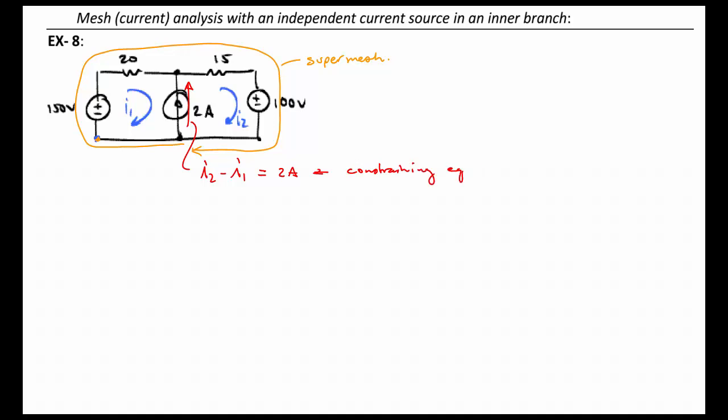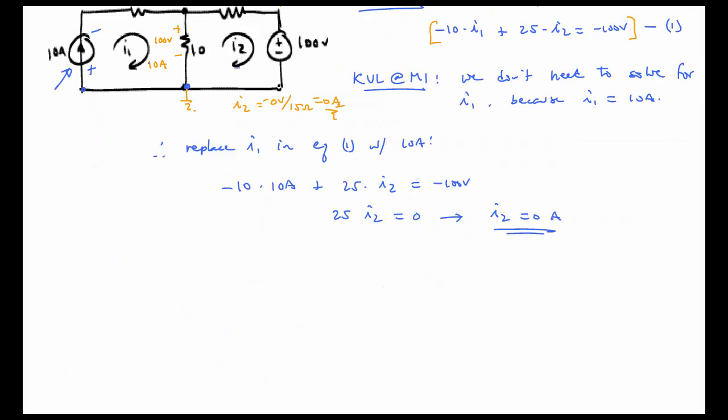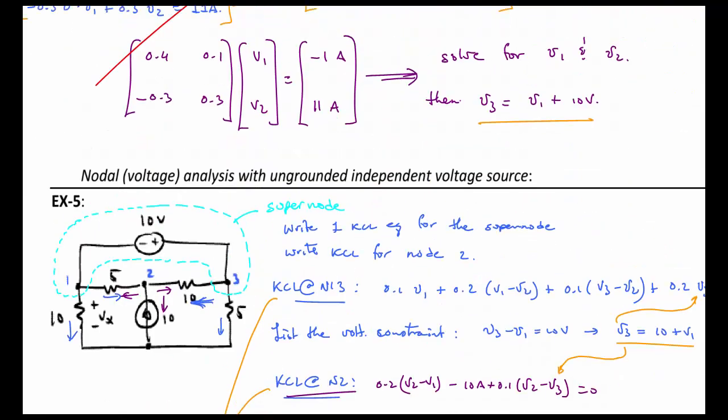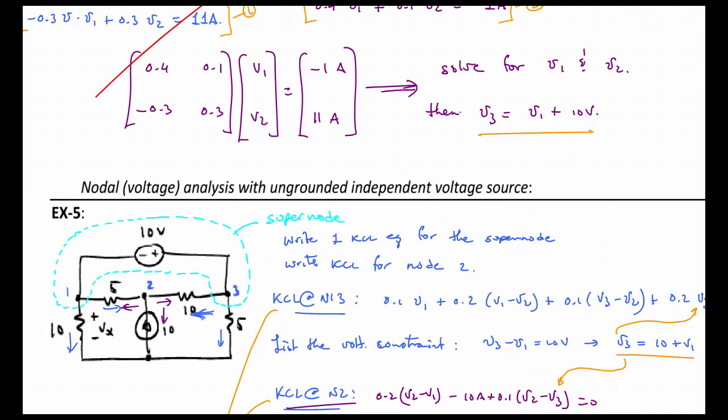This is just like if I go back to a nodal analysis, we had a constraint equation that said that V3 minus V1 is equal to 10 volts. Well, here we have a similar situation, but with currents.